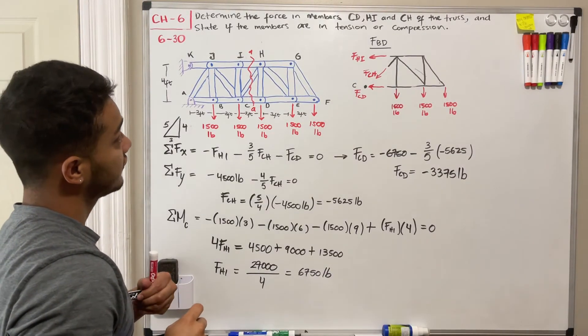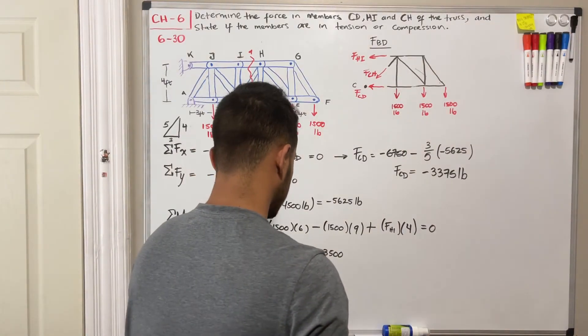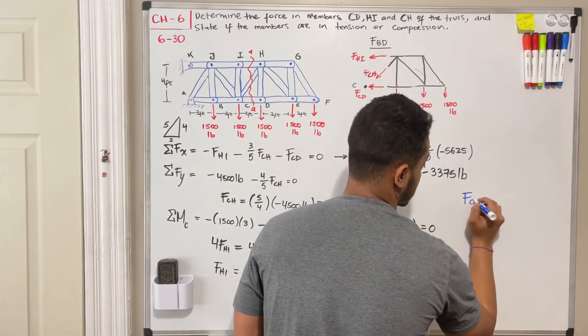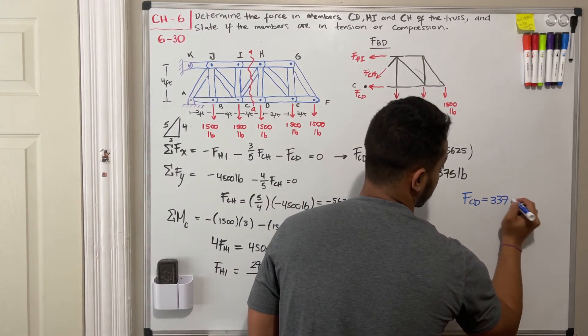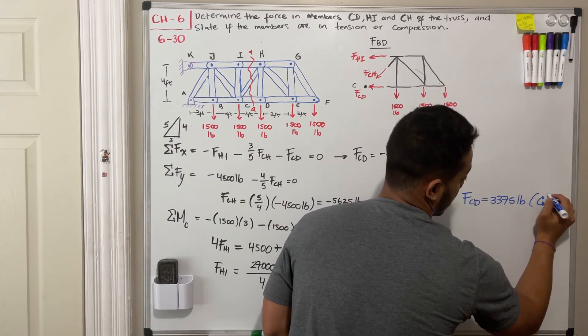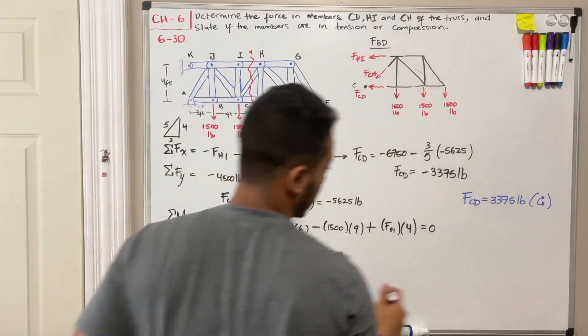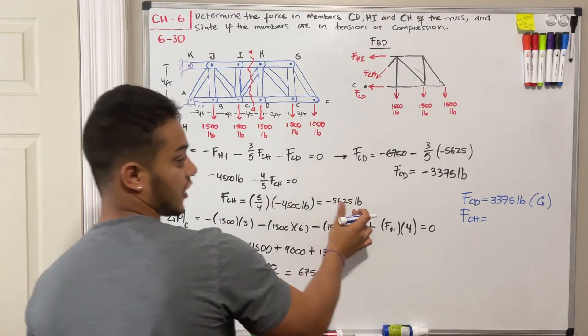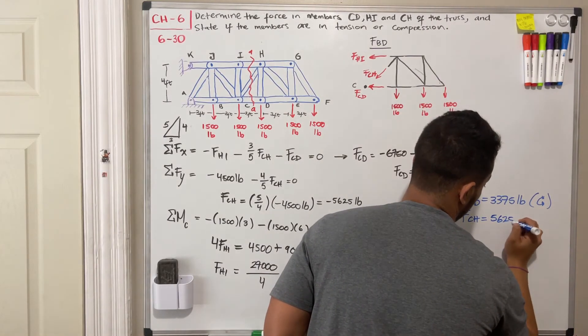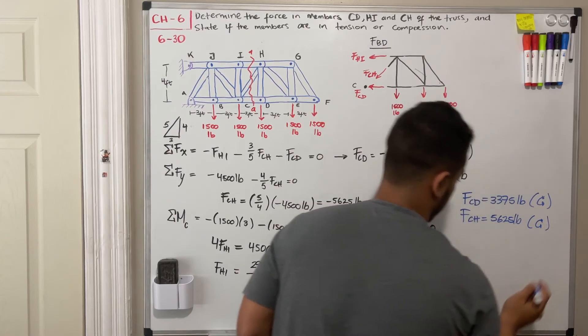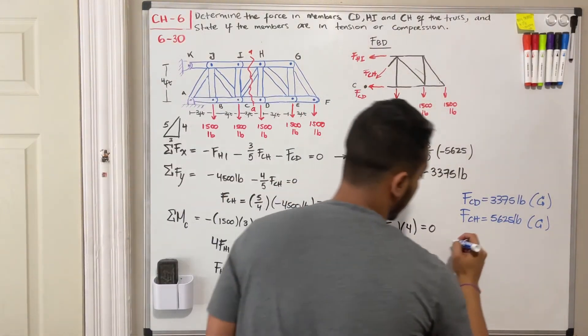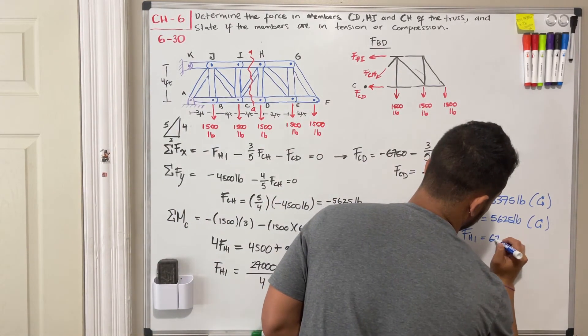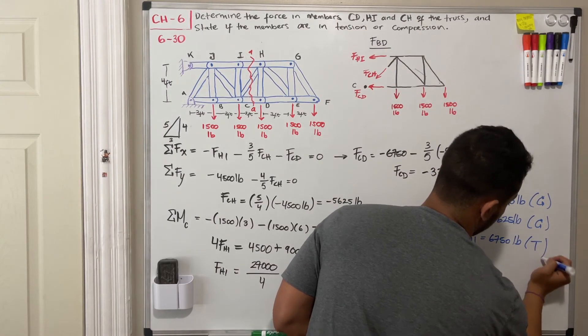Okay. Now, the question is asking me to state if their members are in tension or compression. So the last thing I'm going to do is just, I'm going to write our answers in here, our final answers. So we start with FCD is equal to 3375 pounds in compression. Why in compression? Because we got a negative guy in here. Next one, FCH is going to be equal to 5625 pounds in compression as well. As we can see, we got a negative. And the last one, FHI, is equal to 6750 pounds in tension.